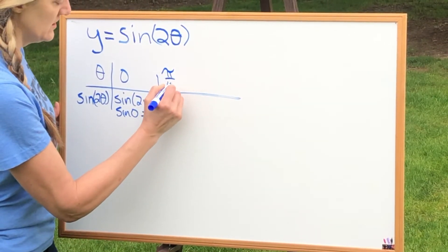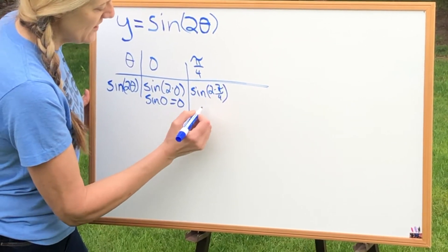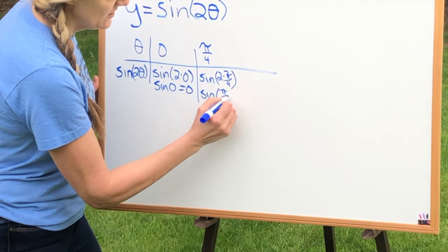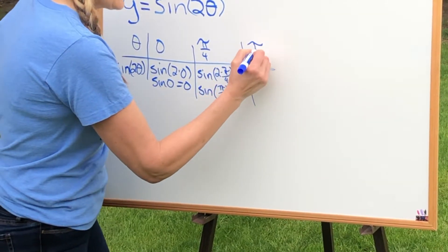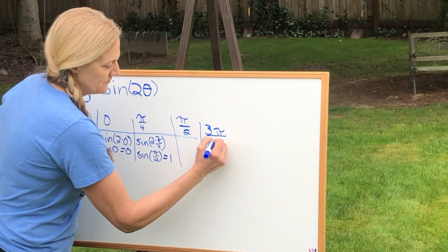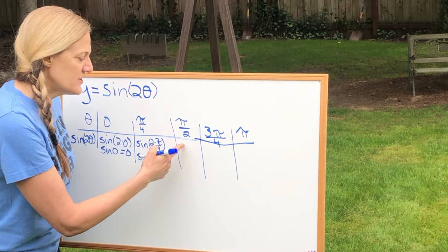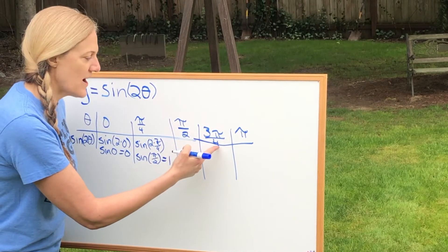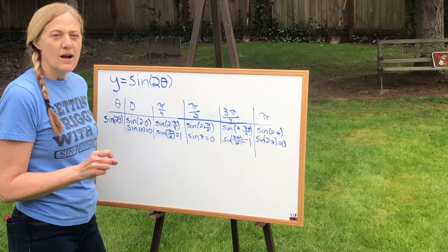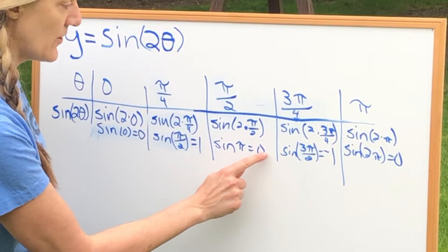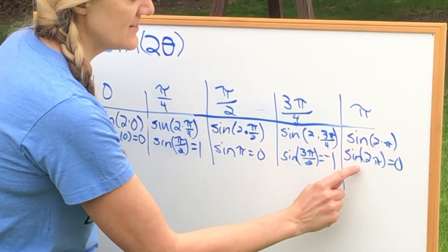What about pi fourths? Well, sine of 2 times pi fourths — the 2 divides out, leaving sine of pi halves, which we know is one. So zero, one. The next ones we did were pi halves, 3 pi fourths, and pi. Sine of 2 times pi halves is sine of pi, which is zero. Sine of 2 times 3 pi fourths — the 2 divides out with the 4 — sine of 3 pi halves is negative 1. Sine of 2 times pi is sine of 2 pi, which is zero. Remember, if that was too quick, you can always pause, rewind, and rewatch.